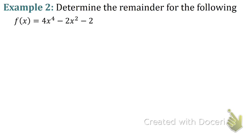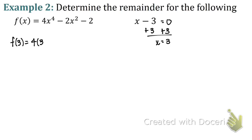Let's look at an example. We're going to determine the remainder for the function f of x equals 4x to the 4th minus 2x squared minus 2, and we are dividing it by x minus 3. So we set x minus 3 equal to 0, and we know that x equals 3. So 3 is what we plug into our function: 4 times 3 to the 4th minus 2 times 3 squared minus 2. We get 304, so 3 definitely was not a factor of the function.